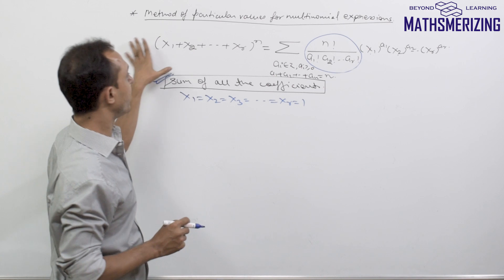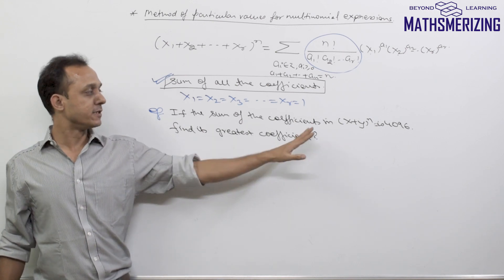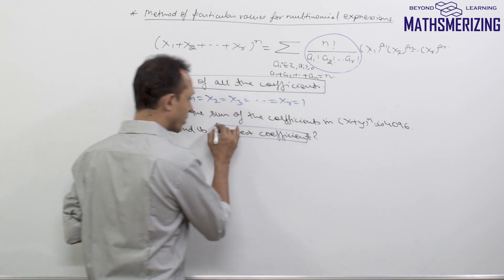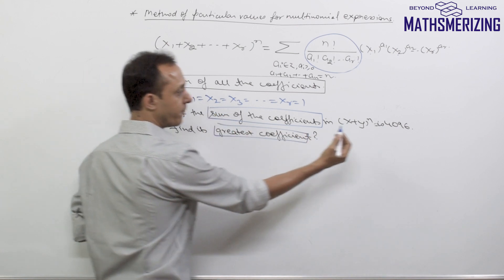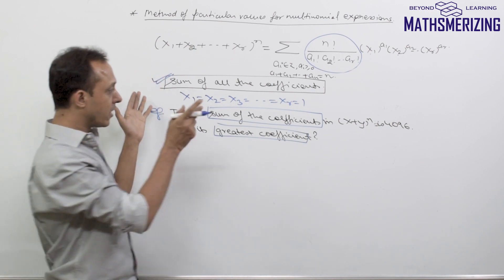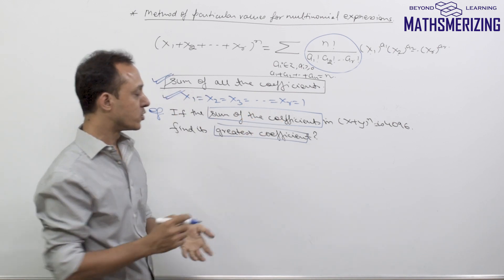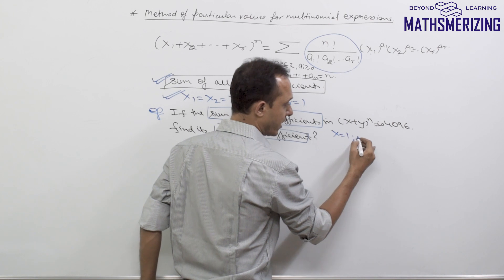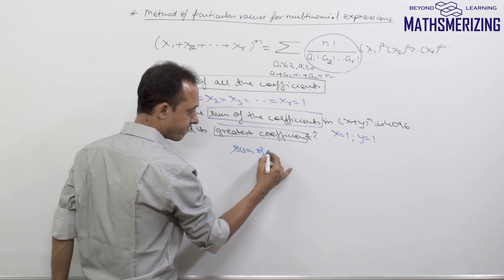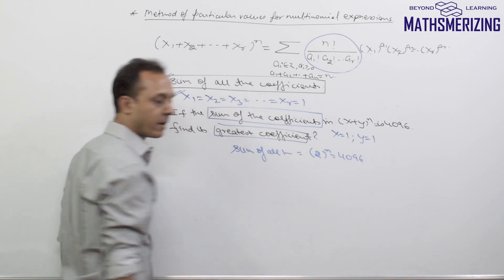In any question where you have to find the sum of all the coefficients, simply put the values of variables as 1. For example, if the sum of the coefficients in (x + y)^n is 4096, I need to find its greatest coefficient. Since the only variables are x and y, I put x = 1 and y = 1, giving sum of all coefficients as 2^n, which equals 4096.